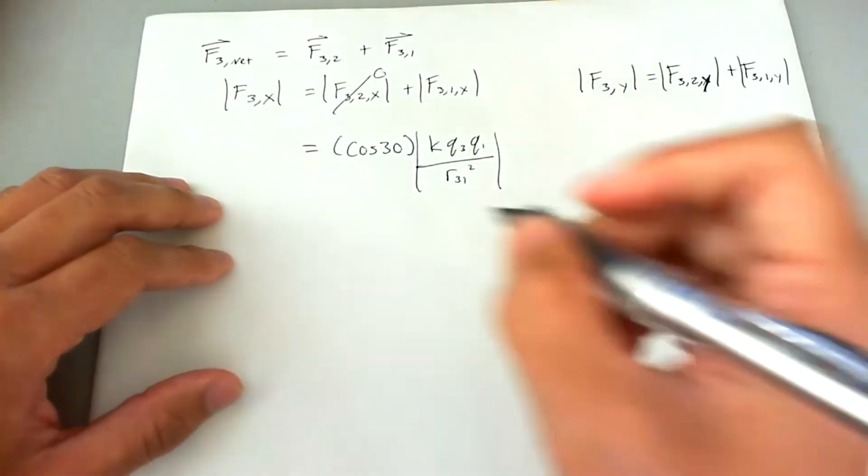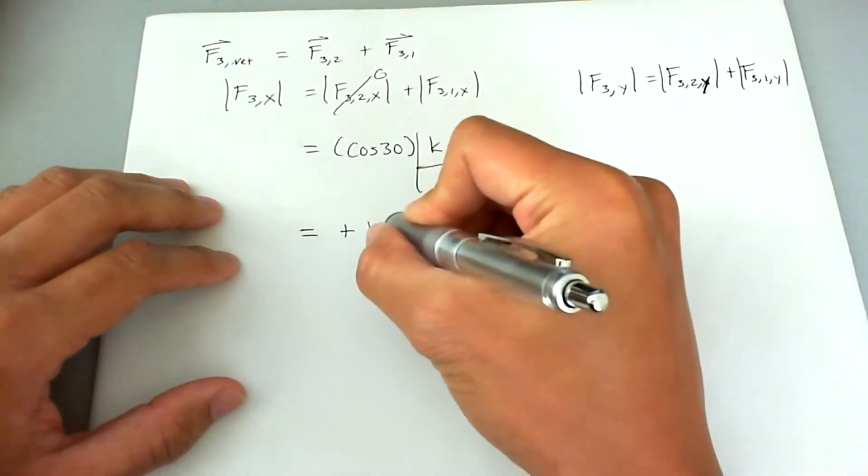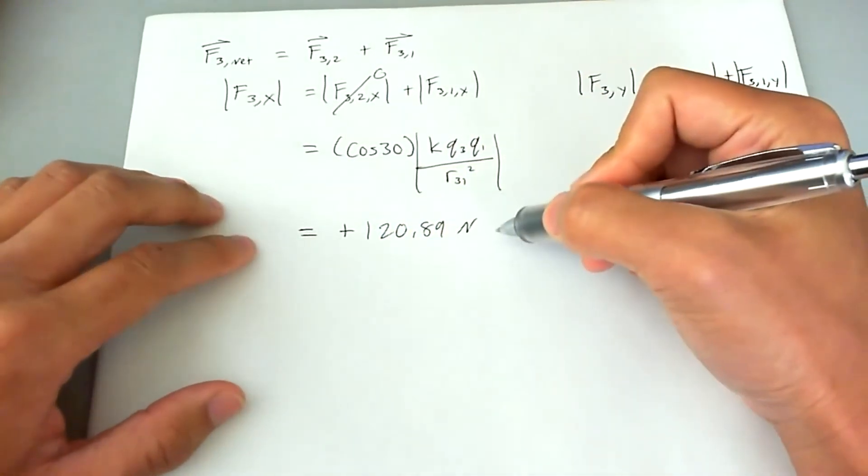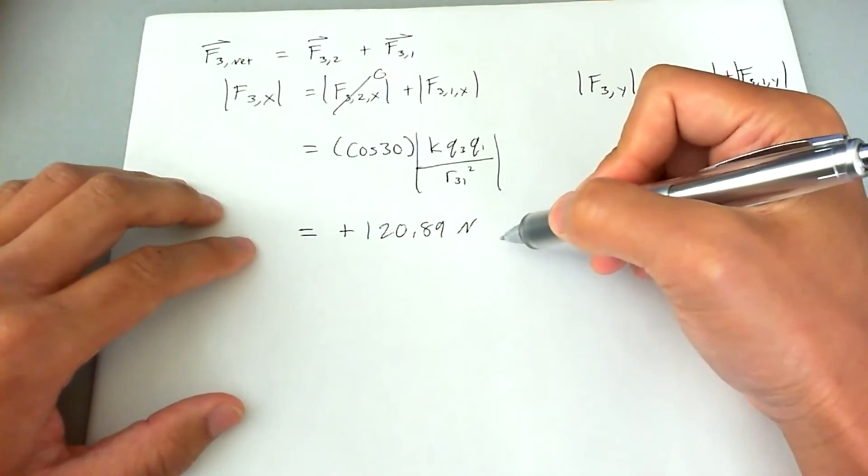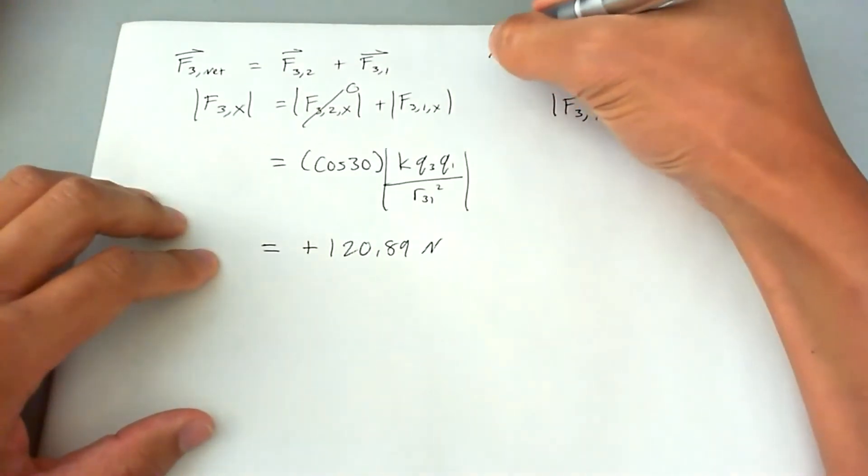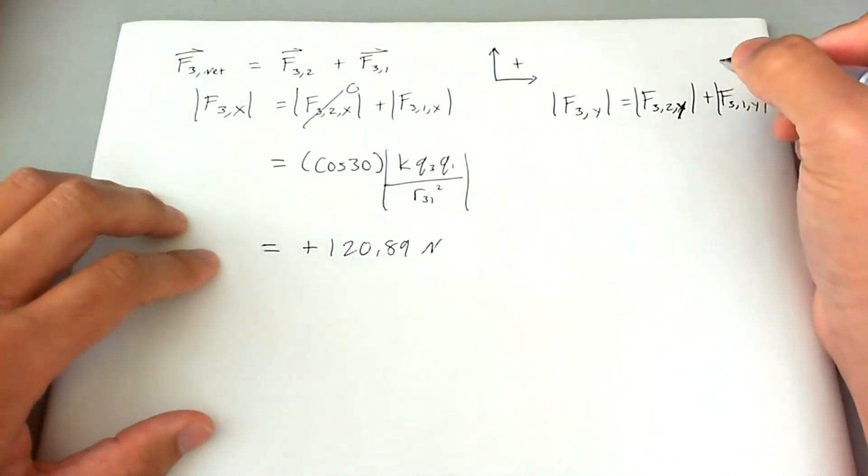So anyway, this ends up being positive 120.89 newtons. Now the reason why it's positive is because it is acting in the right direction. And convention says that if anything acts up or to the right, it is considered positive unless otherwise stated.